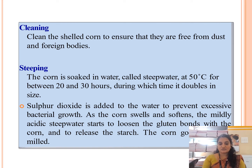In the steeping process, the corn is soaked in water — called steep water — at 50 degrees Celsius for between 20 and 30 hours, during which time it doubles in size. Sulfur dioxide is also added to the steep water to prevent microbial growth. As the corn swells and softens, the mildly acidic steep water starts to loosen the gluten bonds within the corn and release the starch.